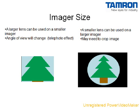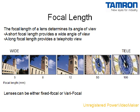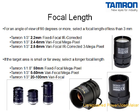A smaller lens can also be used on a larger imager. In this case, because the image captured by the lens will be smaller than the imager, some pixels on the imager will not be illuminated by the image and will appear black. The focal length of a lens is usually measured in millimeters and determines the lens's angle of view. A short focal length provides a wide angle of view, and a long focal length provides a telephoto view. A lens can be either fixed focal, providing only one fixed angle of view, or varifocal, allowing adjustment of the angle of view over a specific range. For an angle of view of 90 degrees or more, select a focal length of less than three millimeters. If the target area is small or far away, select a longer focal length.